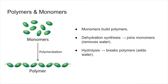The molecules of life are built from smaller units called monomers, which link together to form polymers. The process of building polymers from monomers is called dehydration synthesis — you remove water to form a bond. To break polymers back into their monomers, you use hydrolysis, which adds water.